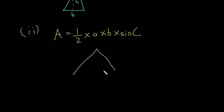So say we have our triangle here. This is going to be our A, this is our B, and this is our angle C.